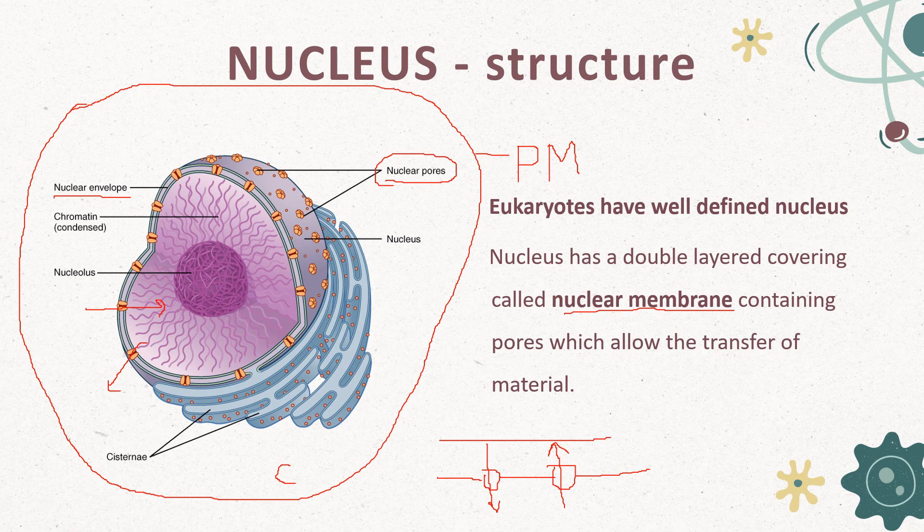Nucleus is bounded by a membrane, which is a characteristic feature of eukaryotes. Only and only eukaryotes have a well-defined nucleus. This means that prokaryotes do not have a well-defined nucleus. We will talk about what the other differences are later in this video.